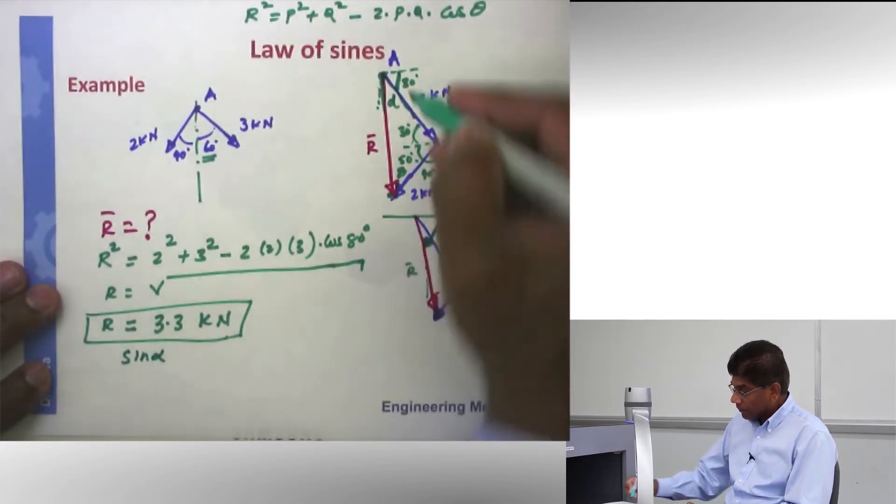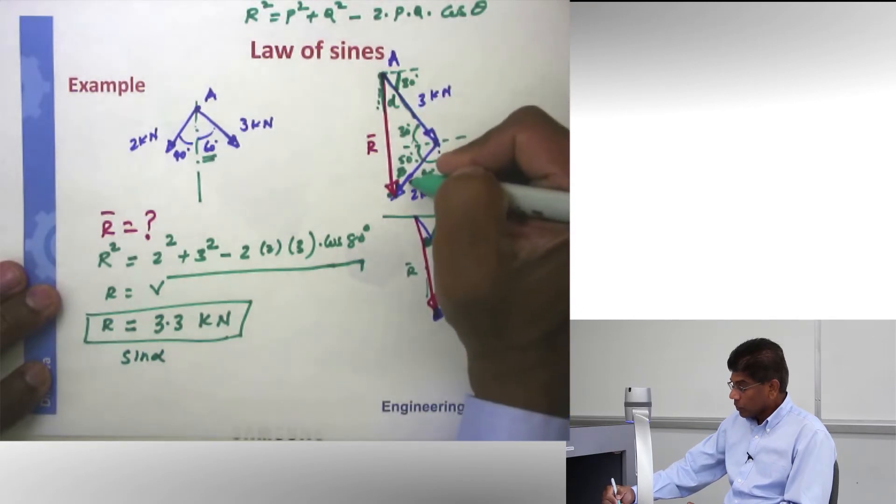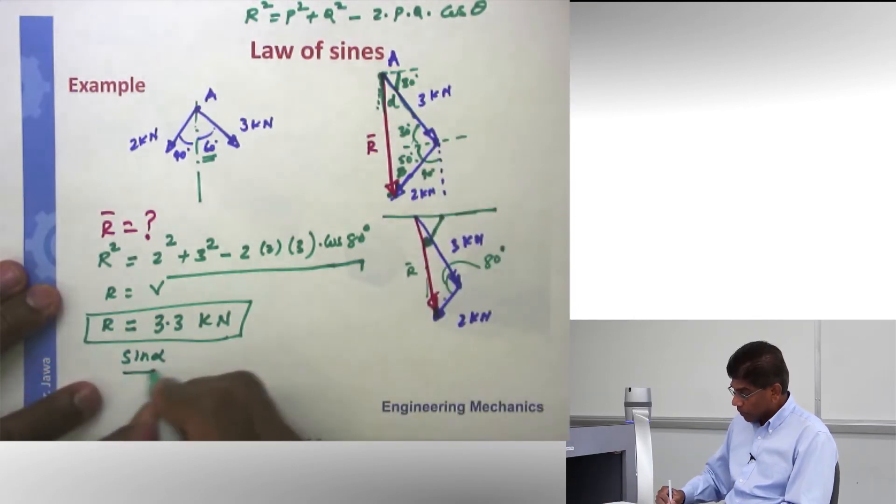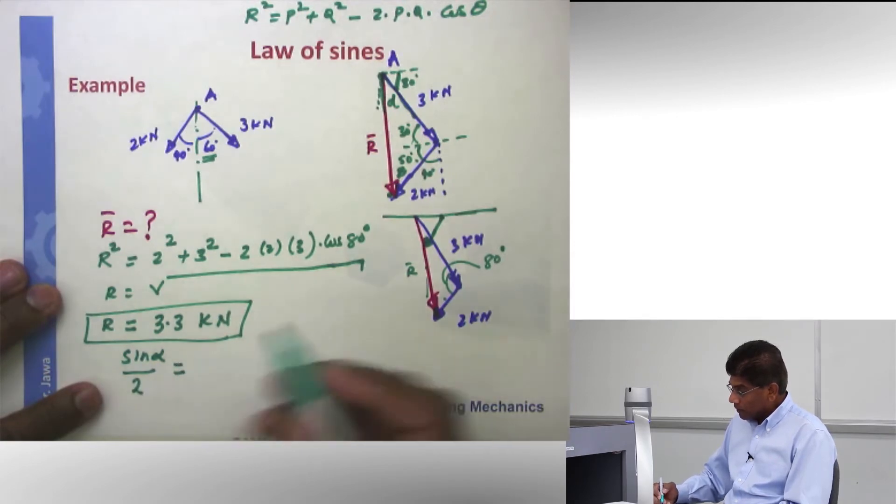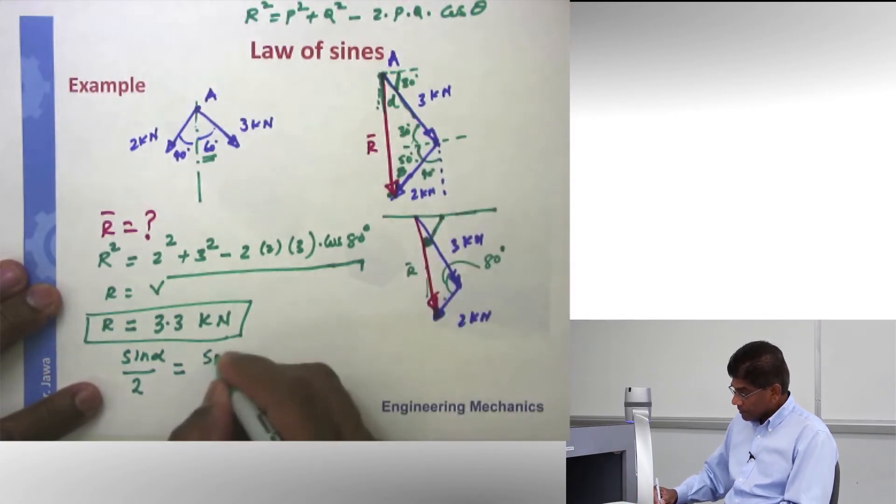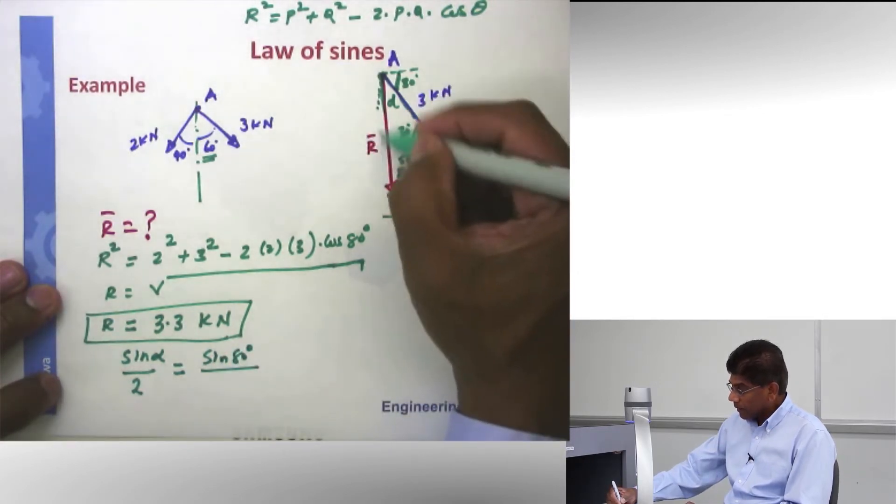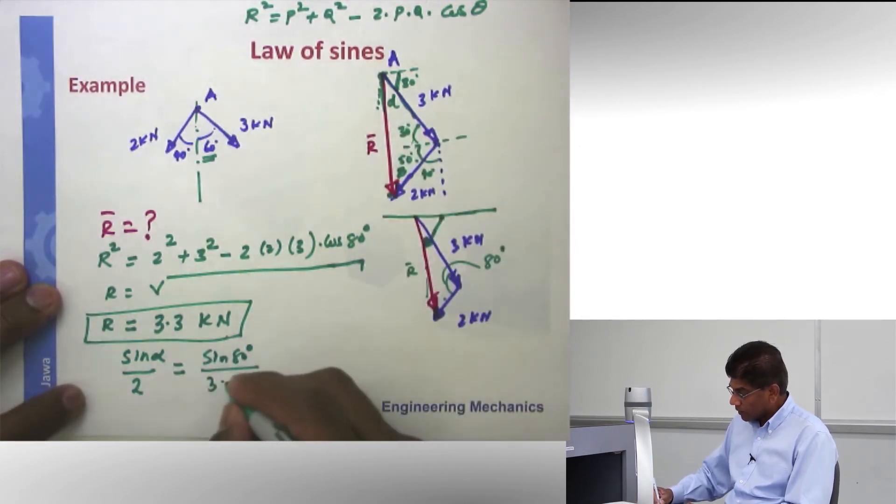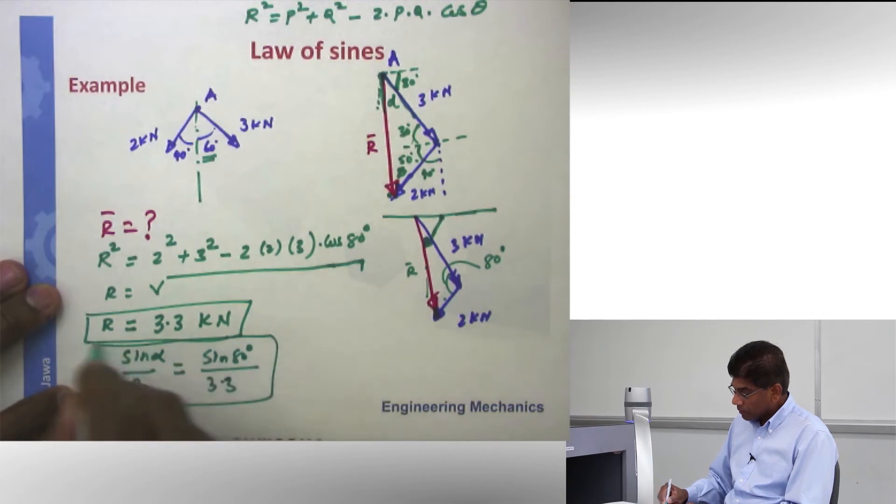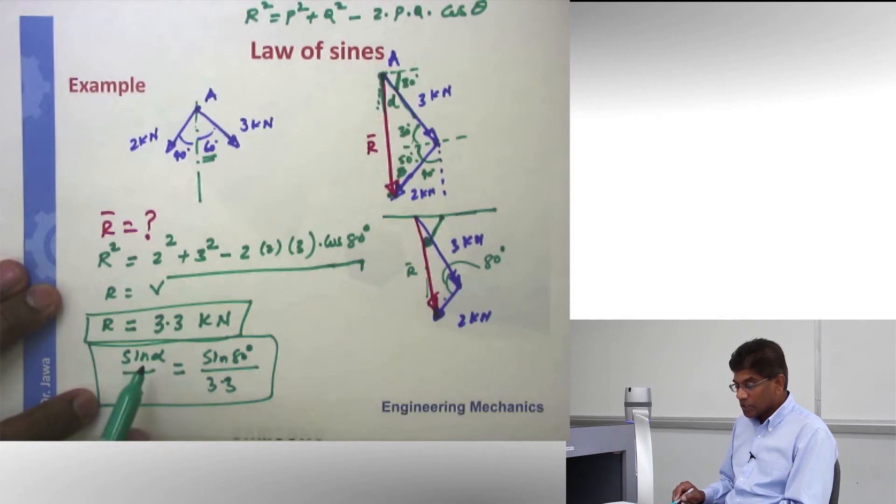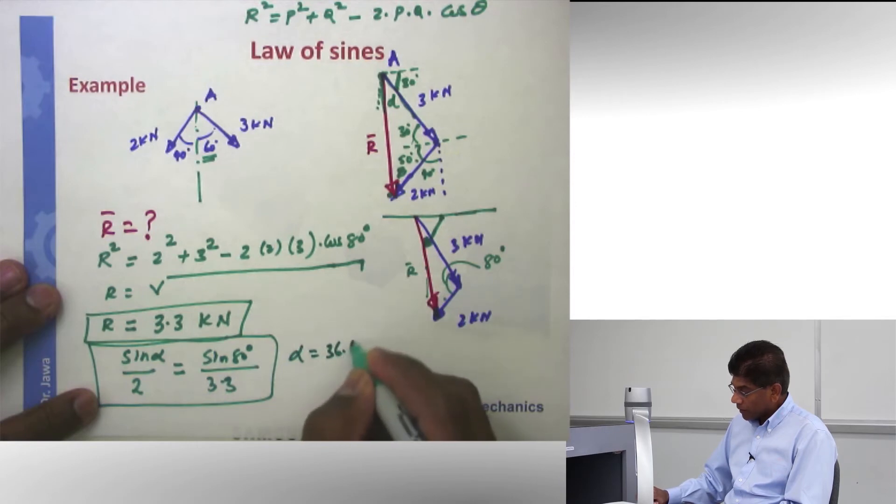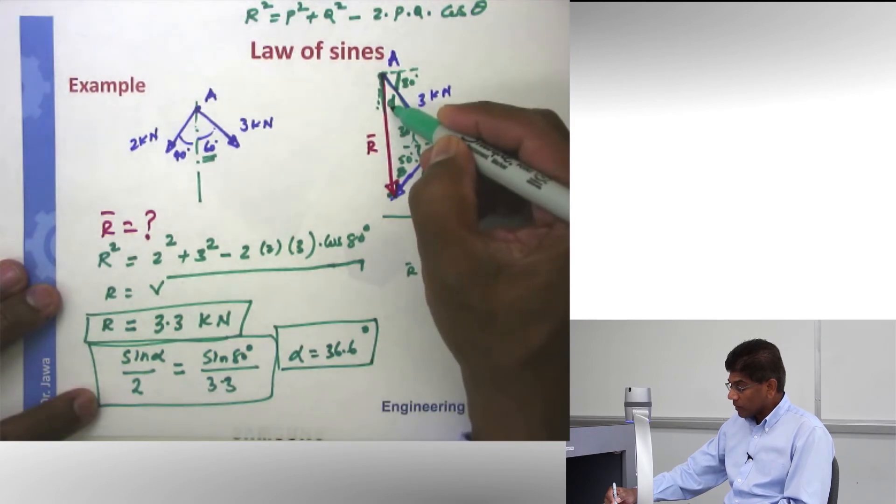Using the side against it, which would be in this case 2 kilonewtons, would be equal to, I know this 80 degrees, sine 80 degrees, divided by the magnitude of R, which I found out as 3.3 kilonewtons. Now you have a simple expression in which the only unknown is on the left hand side, alpha. So I can rearrange and solve for alpha. And if I did that, alpha is equal to 36.6 degrees. Please verify this yourself.